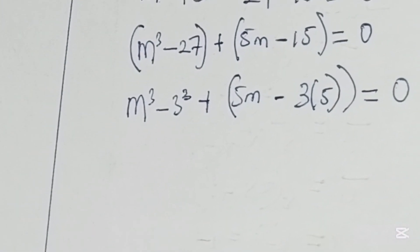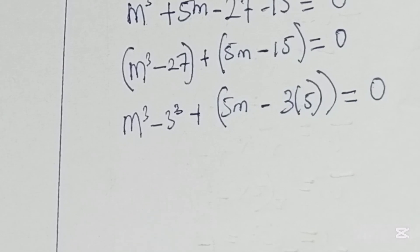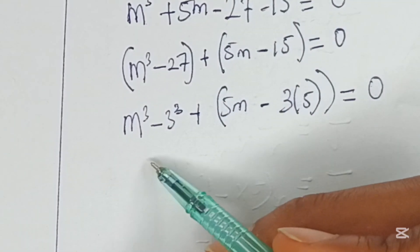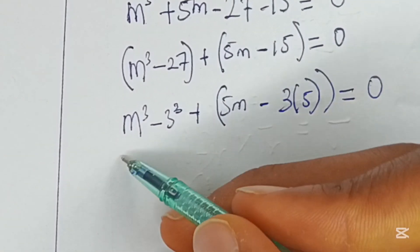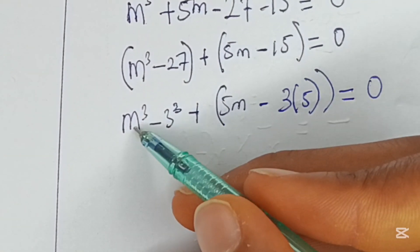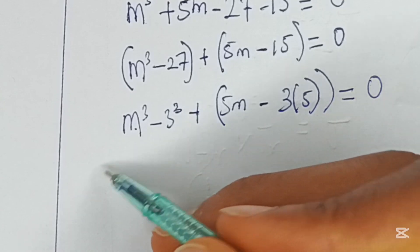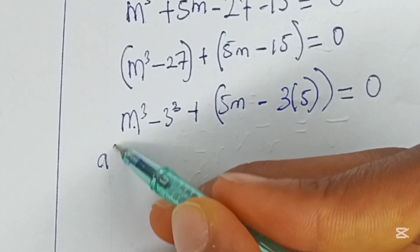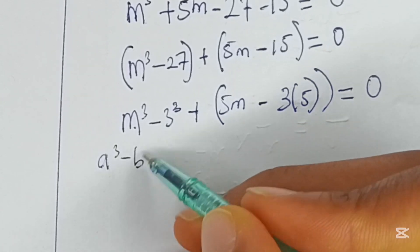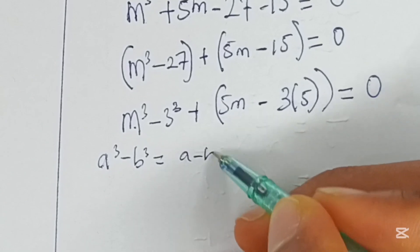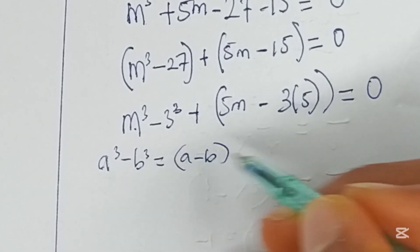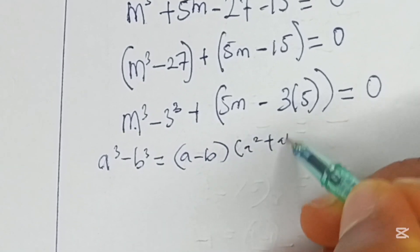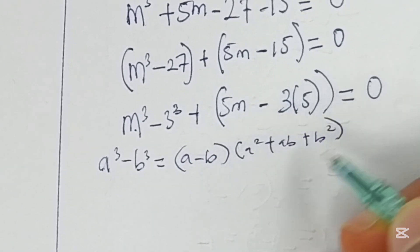From here, we can now say that m cubed minus 3 cubed can be expressed using the relation that says a cubed minus b cubed is equal to a minus b, into a squared plus ab plus b squared.